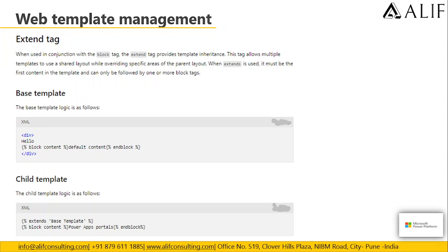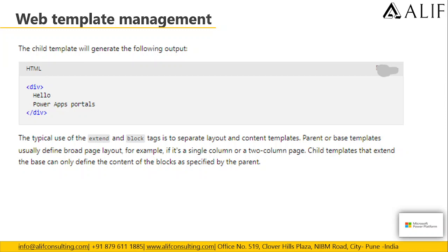In this example, there is a base template and a child template. Inside the child template, the base template has been included using the extends tag, and as a result both contents are combined. So the output would be 'Hello Power Apps Portal' where 'Hello' is derived from the base template. The typical use of extends and block tags is to separate layout and content templates. Parent or base templates define broad page layout such as single column or two-column pages, while child templates that extend the base can only define the content of the blocks specified by the parent.